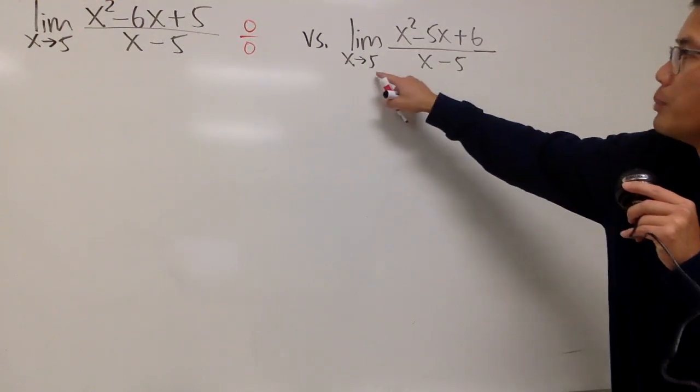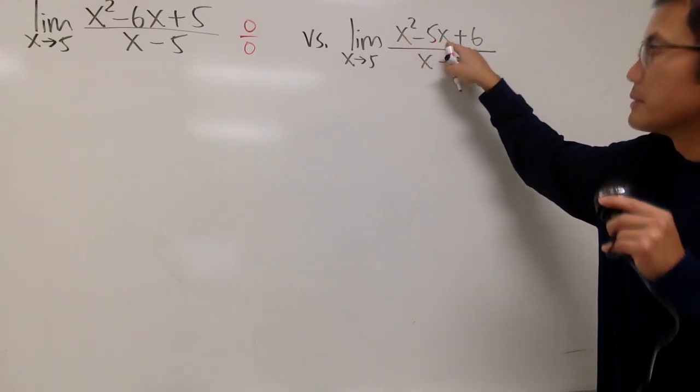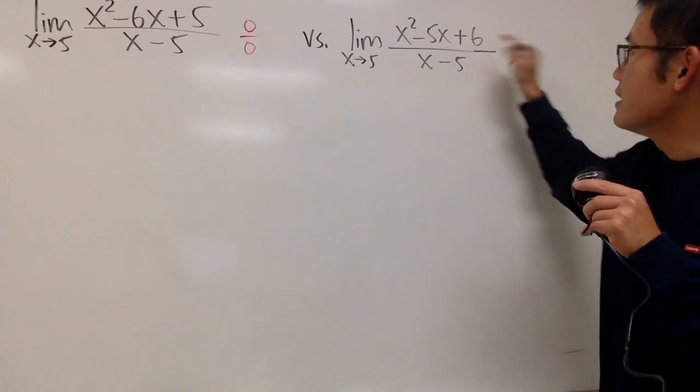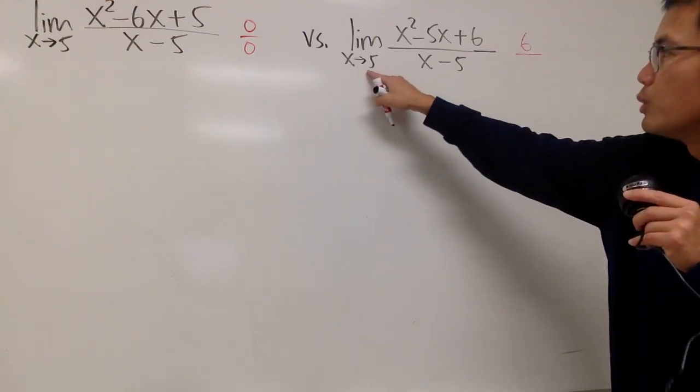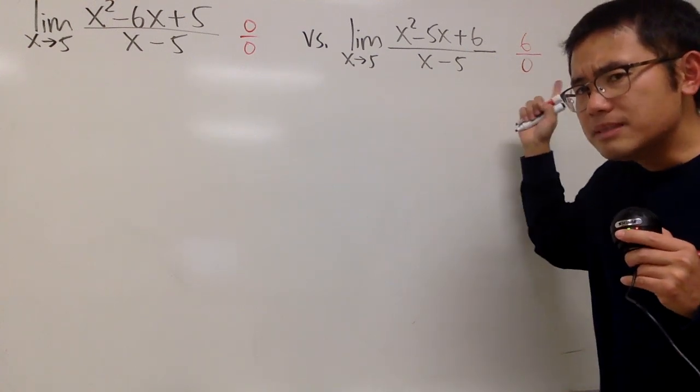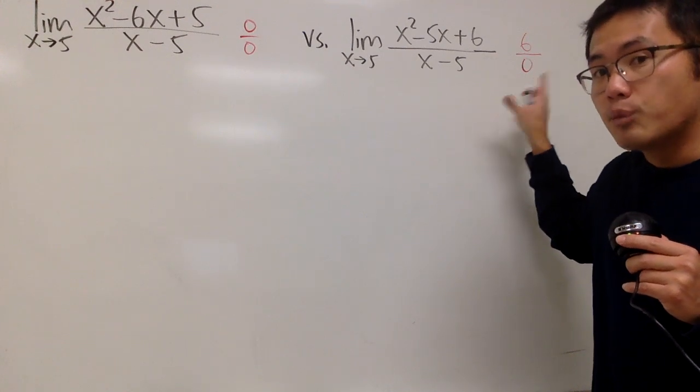For this one though, when we put in 5, 5² - 5×5, that's 25 - 25, so that would be 0, but we still have the 6. So we actually have a 6 on the top. And when we put in 5 right here, we get 0. So that's the computation. This might be slightly strange at the moment, but we have to investigate more.